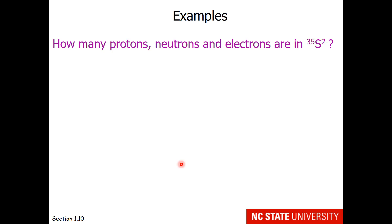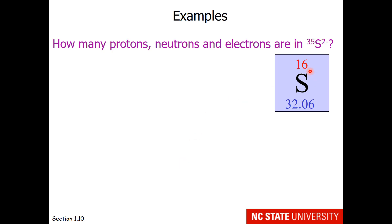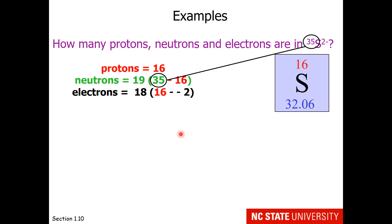Here are a few more examples. We want to know how many protons, neutrons, and electrons are in sulfur with an atomic mass of 35 and a charge of minus 2. First, we find sulfur on the periodic table and see that it has 16 protons. For neutrons, we take the atomic mass of 35 and subtract the number of protons, giving us 19 neutrons. For electrons, we take the number of protons and subtract the charge of minus 2 — a minus times a minus is a plus — so we wind up with 18 electrons.